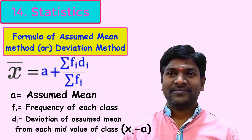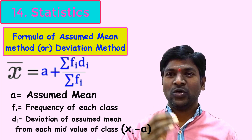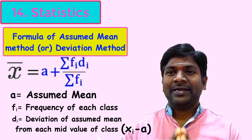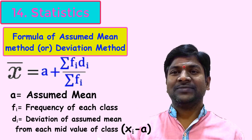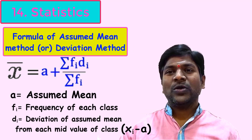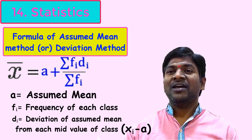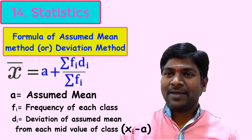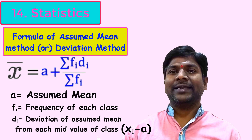A common doubt when solving problems is: which value can be considered as assumed mean? The assumed mean 'a' is taken from one of the mid values of the classes. First we write the classes and their mid values, then one of those mid values is considered as assumed mean. d_i is x_i minus a, so using this formula we can calculate the classified data's mean.